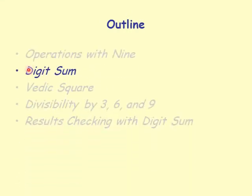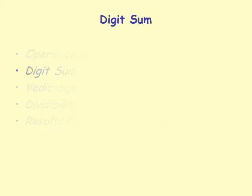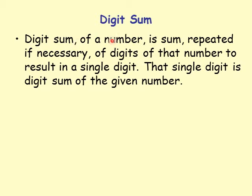Now we are in the second section: we are going to discuss digit sum. The digit sum of a number is the sum — repeated if necessary — of the digits of that number to result in a single digit. That single digit is the digit sum of the given number.